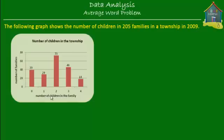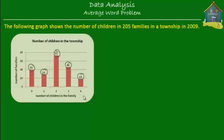Here is the graph. The x-axis is the number of children in the family, and the y-axis has the number of families. In 2009, there were 39 families that had zero children each, 29 families that had one child each, 73 families with two children each, 46 families with three children each, and 18 families with four children each.